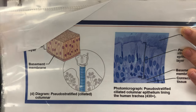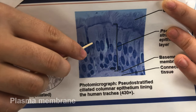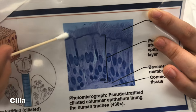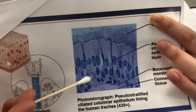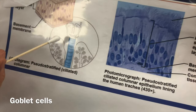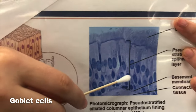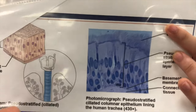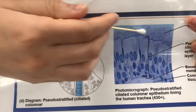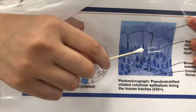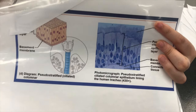Pseudostratified columnar also has cytoplasm, a plasma membrane as the outer covering, and cilia right up here that form almost a brush border — cilia sweeps stuff along. Goblet cells are also present, secreting mucus. A common place to find this tissue is lining your trachea: goblet cells produce mucus and the cilia sweep that mucus up so nothing goes down into your lungs and blocks your airway.